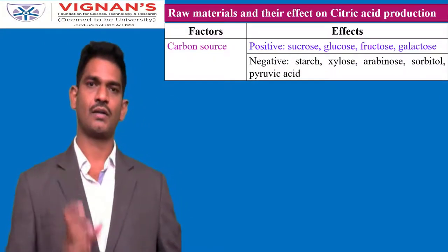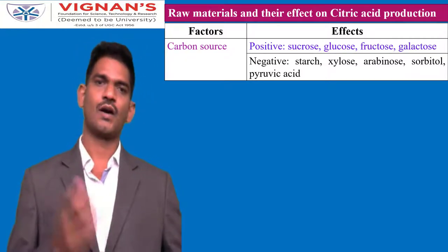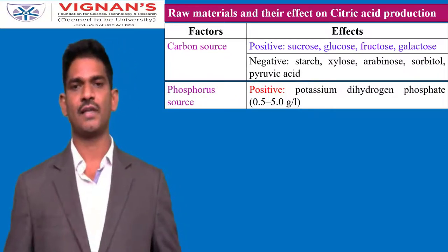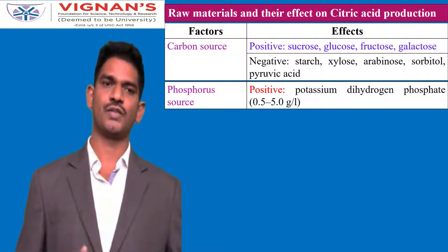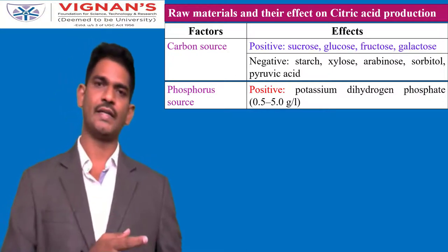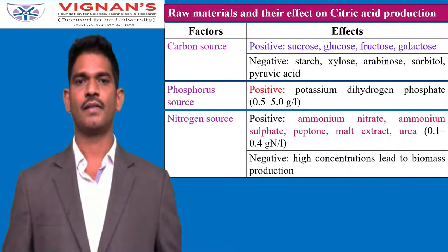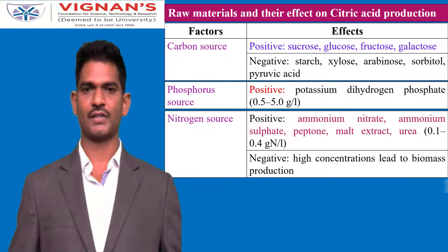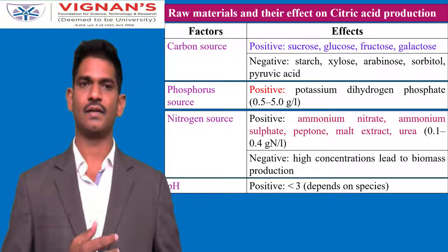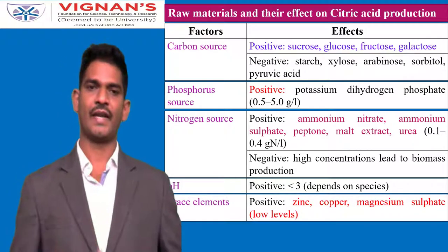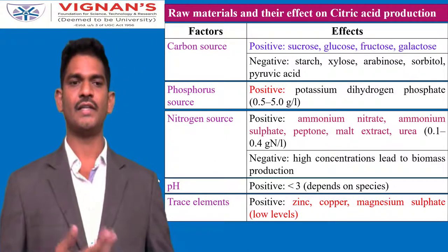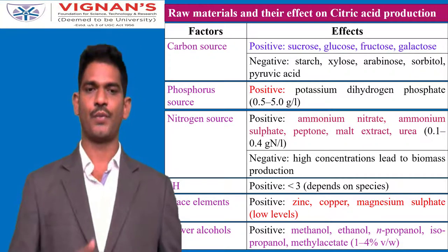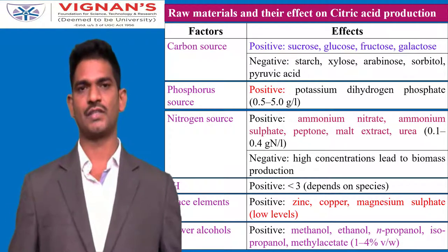A summary of raw materials and their effects: carbon sources — sucrose, glucose, and fructose — have a positive effect on citric acid production. Phosphorus sources: potassium dihydrogen phosphate at 0.5 to 5 g/L increases citric acid production. Nitrogen sources: ammonium nitrate, ammonium sulphate, and peptone are preferred. pH must be maintained less than 3 depending on the species. Trace elements — zinc, copper, and magnesium sulphate — are essential at low levels. Low concentrations of alcohols such as methanol, ethanol, and n-propanol accelerate the biosynthesis of citric acid.